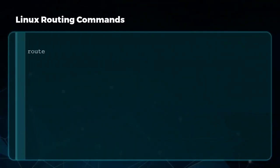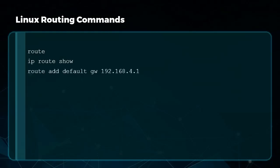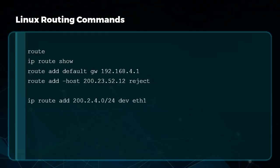To view the routing table, issue the route command or ip route show. To add a default gateway route, use route add default gw followed by the IP address. To add a host route and reject connections, use route add -host with the IP and the reject keyword. You can also use ip route add with a network address and CIDR mask tied to a device like eth1. The traceroute command traces the path your traffic takes through routers to reach a destination — specified as an IP or DNS name.